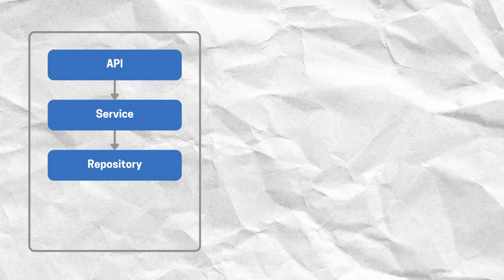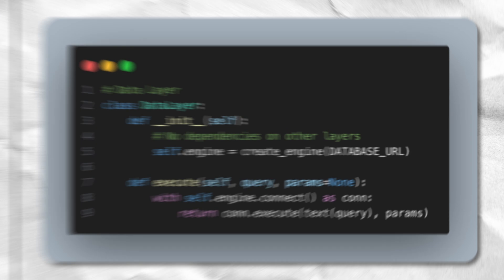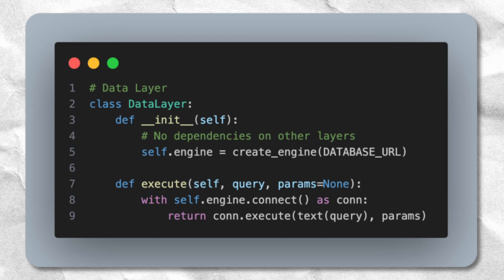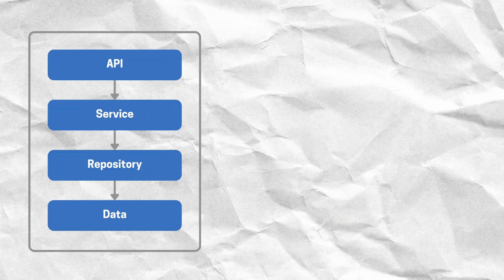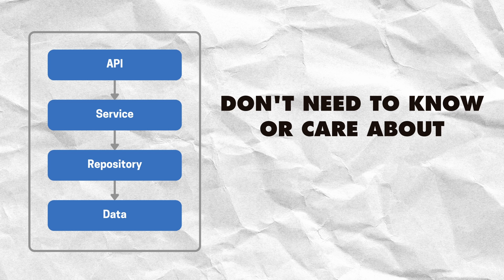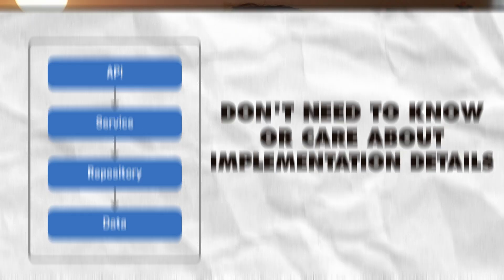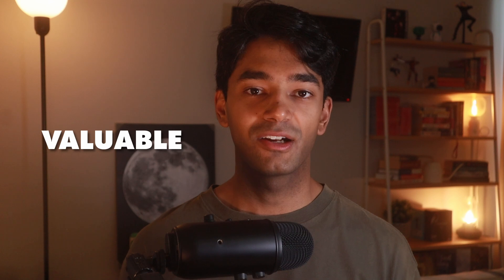Finally, at the bottom we have the data layer. This is just a simple abstraction around database communications — it could be using SQLAlchemy or any other database client, and the layers above don't need to know or care about its implementation details. A layer structure like this gives us a clean separation between the different parts of my application. Later in this video, I'll show you why this kind of organization is super valuable for a startup, and how it allows my codebase to be more flexible and agile when I need to make changes or pivot based on user feedback.